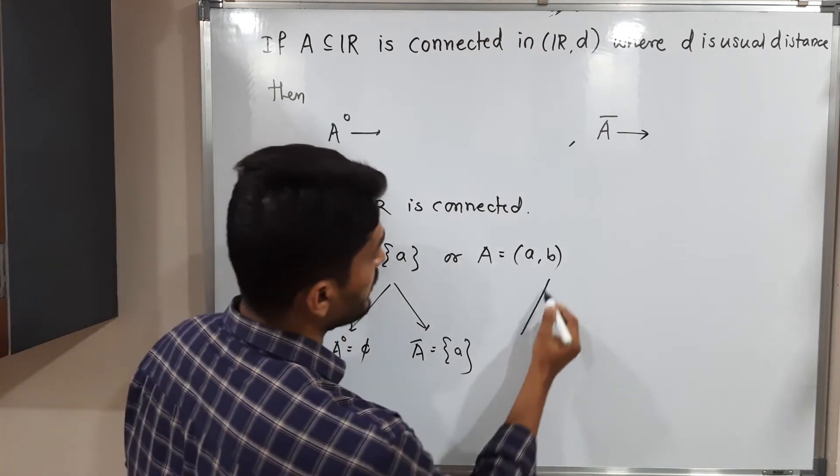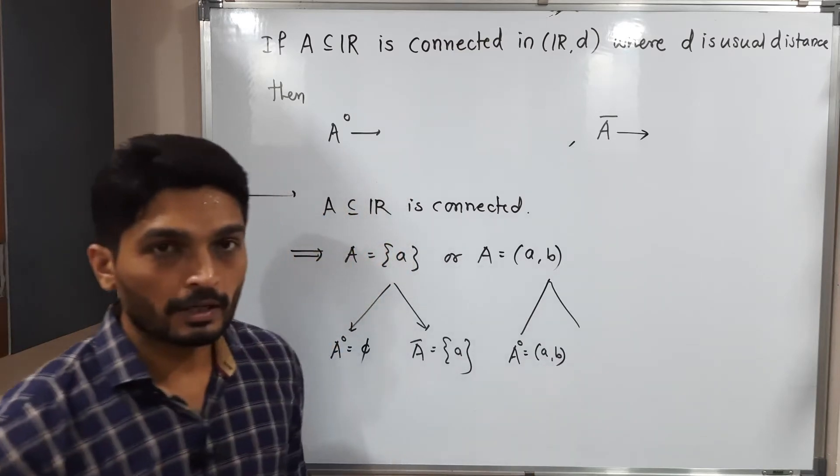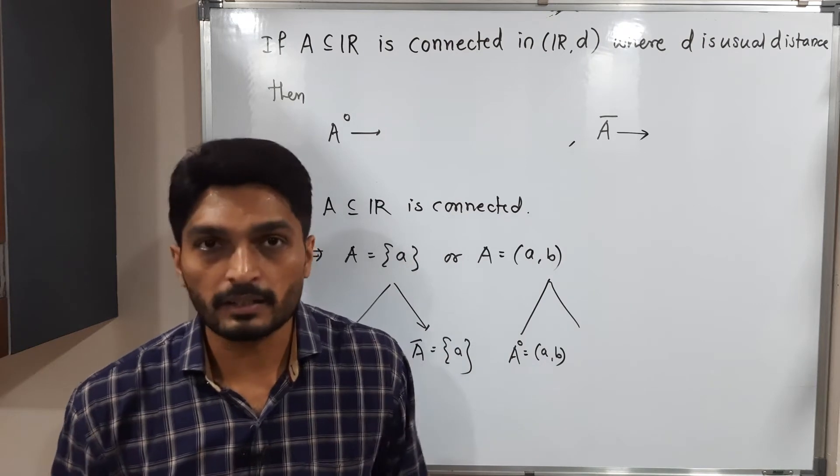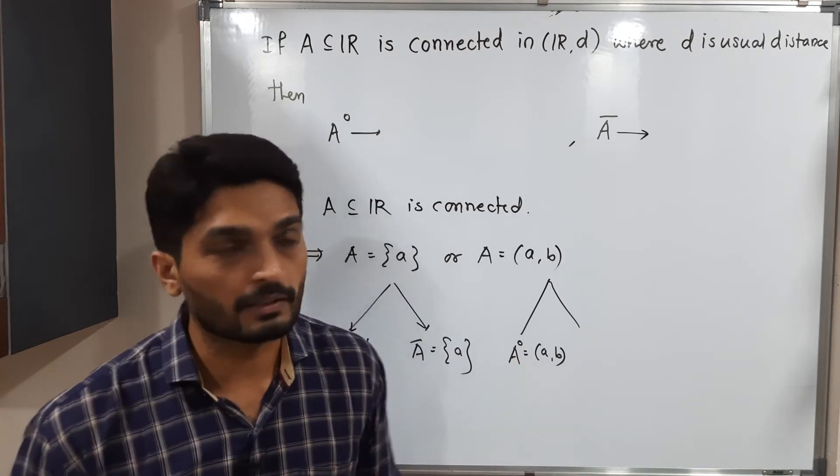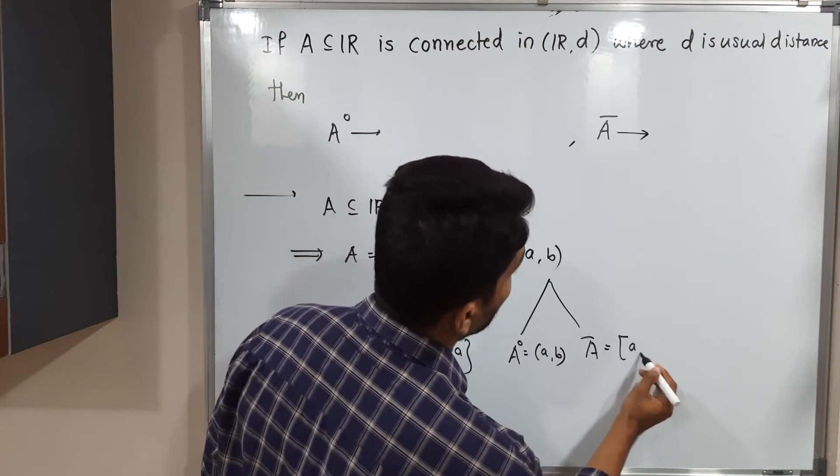If it is an interval, what will happen? A° is equal to an open interval. If you have a closed interval [a,b], its interior will be the open interval (a,b), and its closure will be the closed interval [a,b].